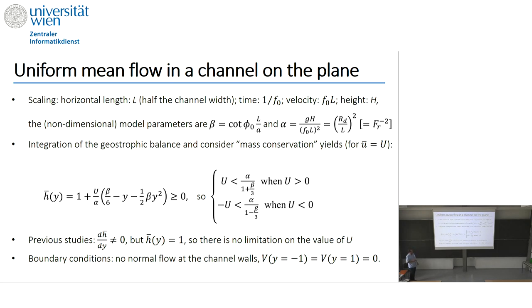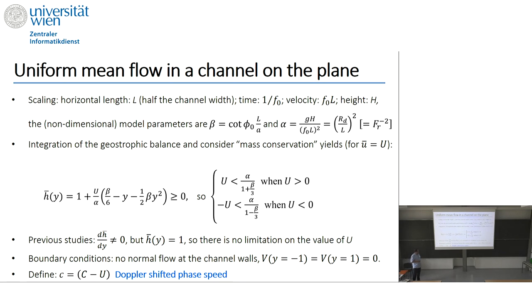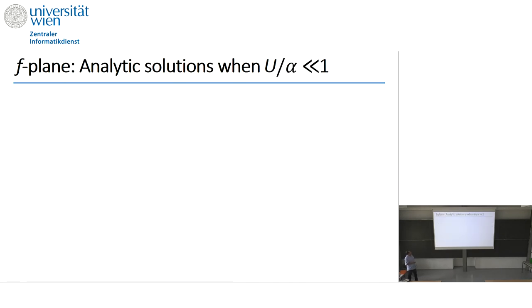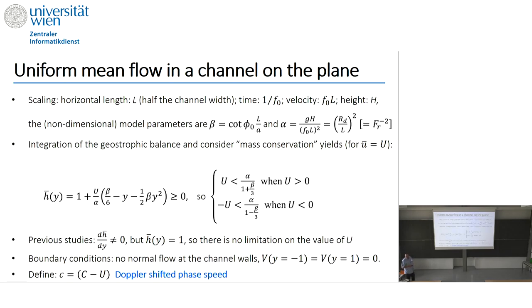The boundary conditions are no normal flow at the channel walls, meaning the meridional velocity vanishes at both walls. We also define small c as the Doppler-shifted phase speed, where capital U is the amplitude of the mean flow, which is uniform.